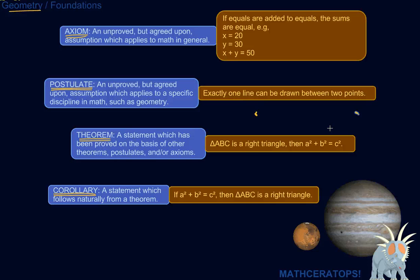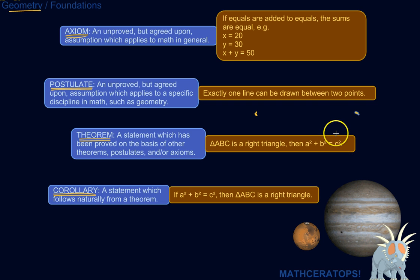which states that if a triangle is a right triangle, and we call the sides a, b, and c, then a squared plus b squared equals c squared, where c is the hypotenuse — the longest side. Pythagoras proved this, and so this is a well-proven theorem.